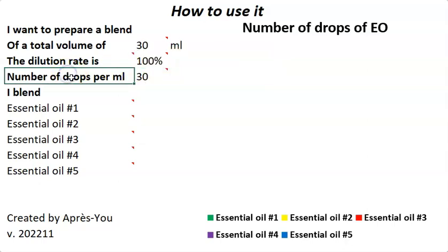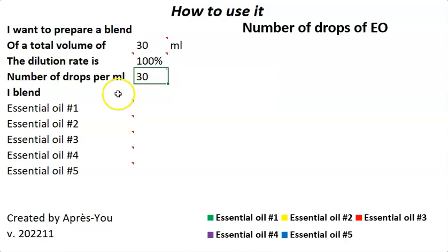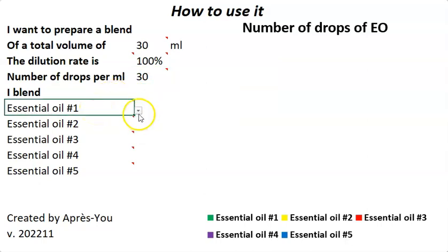You can also choose to change the number of drops per milliliter — and I'm speaking about essential oils here. Normally I recommend 30 drops per milliliter, but you can adjust this number if you think it's too much or not enough.